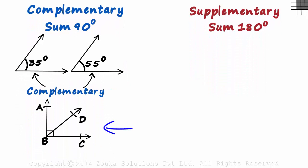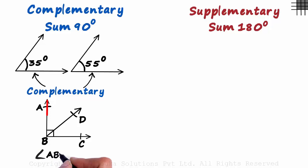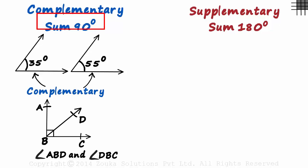Look at this figure and try to name the two complementary angles. Here, we are given that angle ABC is a right angle, which means it measures 90 degrees. It means the sum of these two angles will surely be 90 degrees. So angle ABD and angle DBC will be complementary angles. Remember, if the sum is 90 degrees, then the angles are complementary.